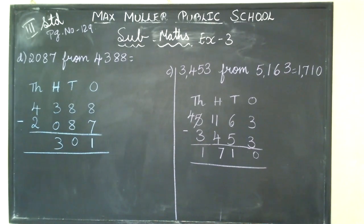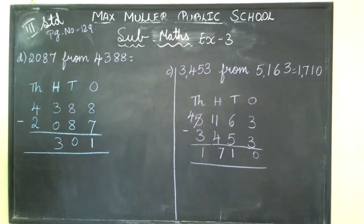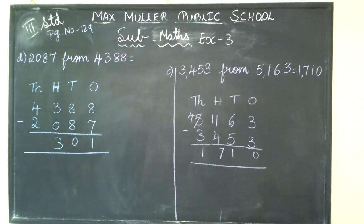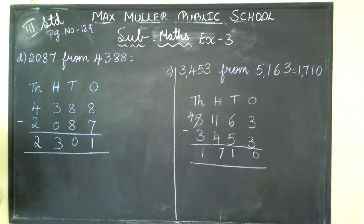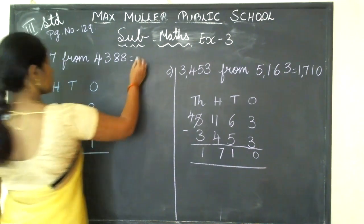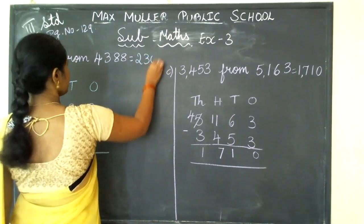You know now some important points — when starting subtraction I have told few points. Next, in the thousands place, what is the number? 4. From 4 if I minus 2: 1, 2 — how much is remaining? 2 is remaining. Write 2. Answer: 2,301.